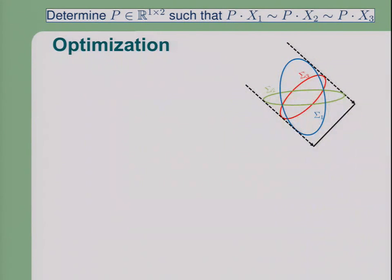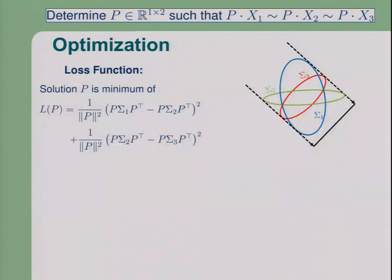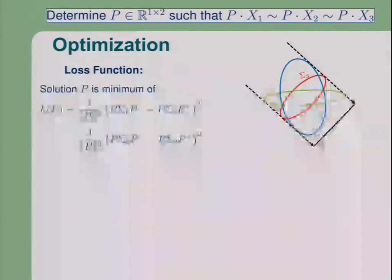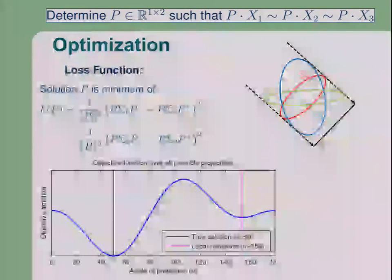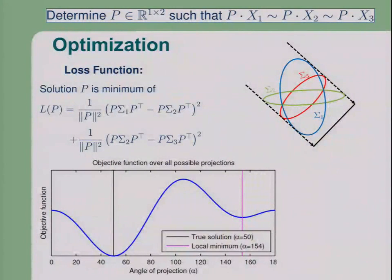So what's now the standard way of tackling this problem? You would write down a loss function. One possible loss function to write down here would be this one, normalized for not running to infinity. Those are just the differences of the projections. You can come up with hundreds of other loss functions, sophisticated loss functions involving some noise model or Kullback-Leibler divergences. Let's look at this loss function. If you write down this loss function, you will see you have a minimum, a global minimum at the true solution and a local minimum, a spurious local minimum, which corresponds to this projection.